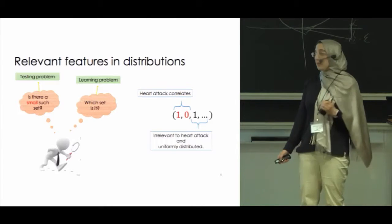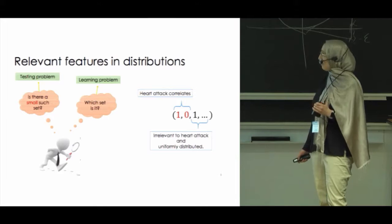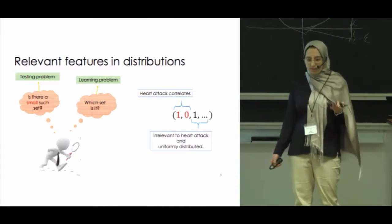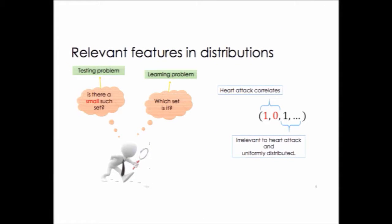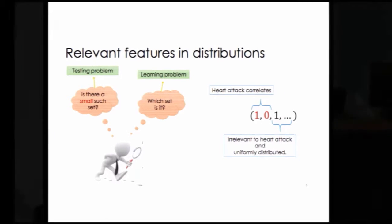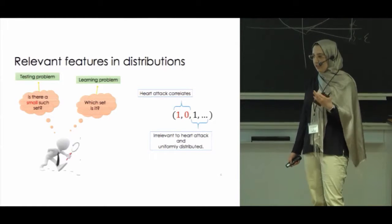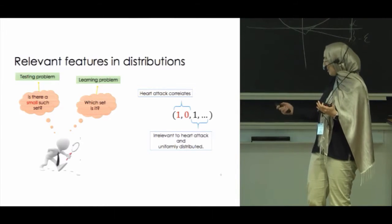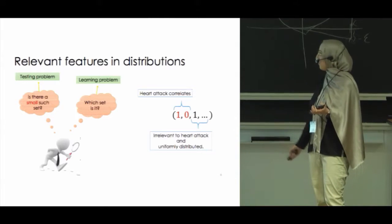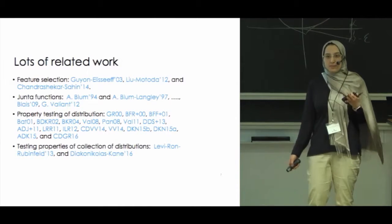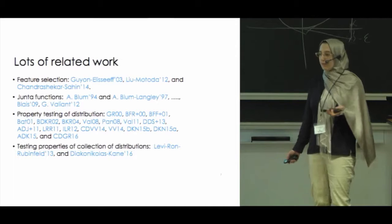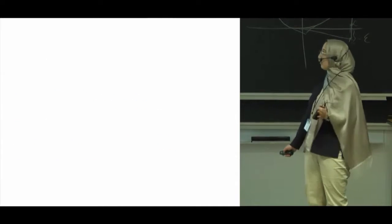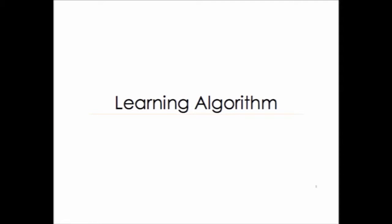There are two problems we are considering in this paper. First, we want to test whether there is a small set of coordinates such that the distribution can actually be described by those coordinates. Second, if we know such a set exists, which features or coordinates are in it? The first problem is called the testing problem and the second is called the learning problem. This problem has been considered in different models and contexts, and here are just a few examples.